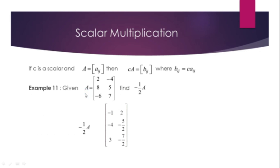Example 11: Given A = [2, -4, 8 / 5, -6, 7], find (-1/2)A. Multiplying each entry by -1/2: 2 × (-1/2) = -1, -4 × (-1/2) = 2, and so on for each entry.